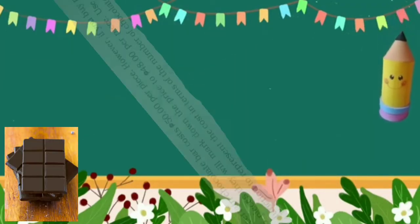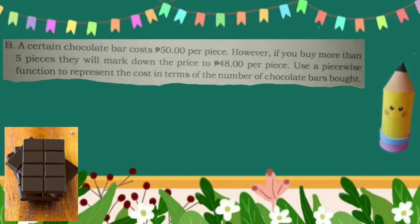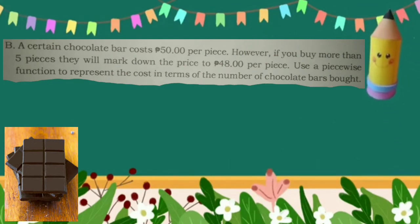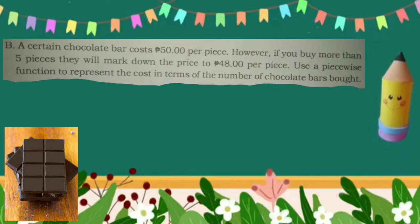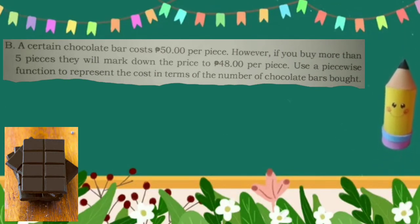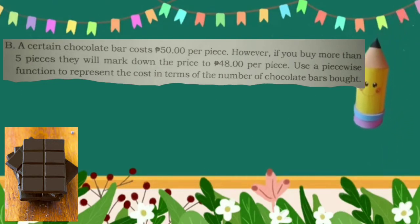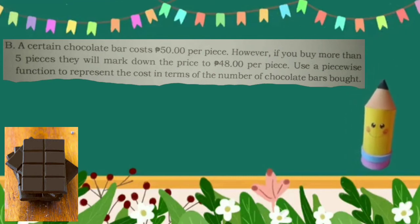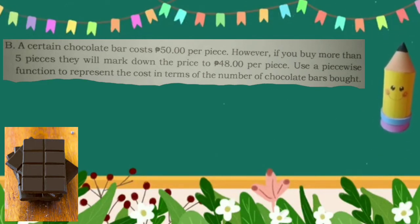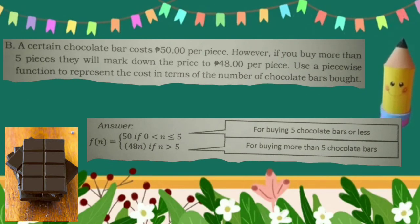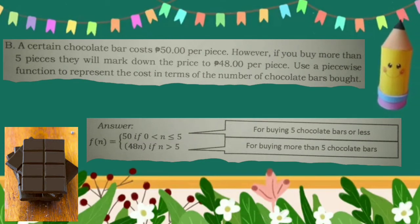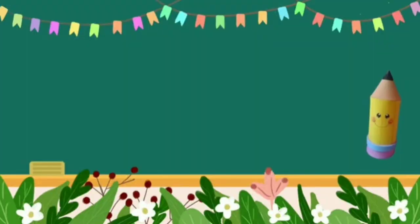Example B. A certain chocolate costs 50 pesos per piece. However, if you buy more than 5 pieces, they will mark down the price to 48 pesos per piece. Use a piecewise function to represent the cost in terms of the number of chocolate bars bought. This is the formula for buying five chocolate bars or less. However, this is the formula for buying more than five chocolate bars.